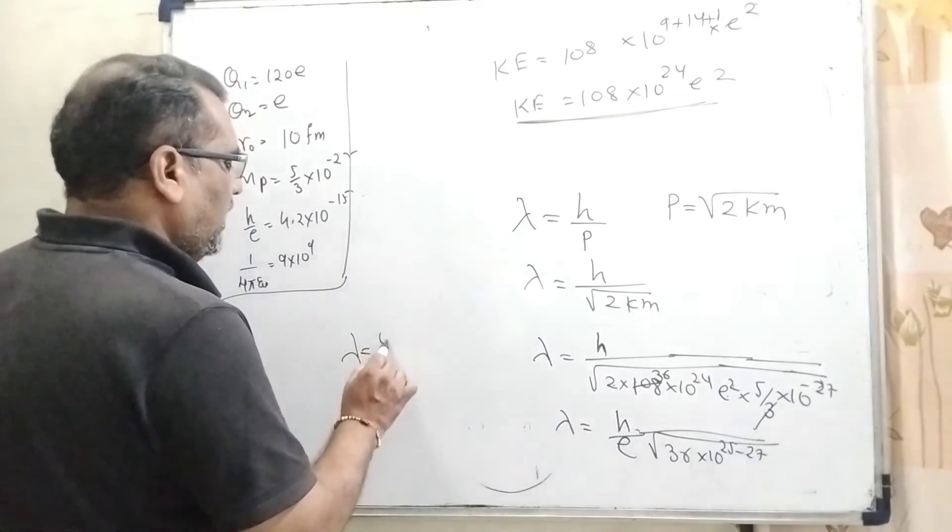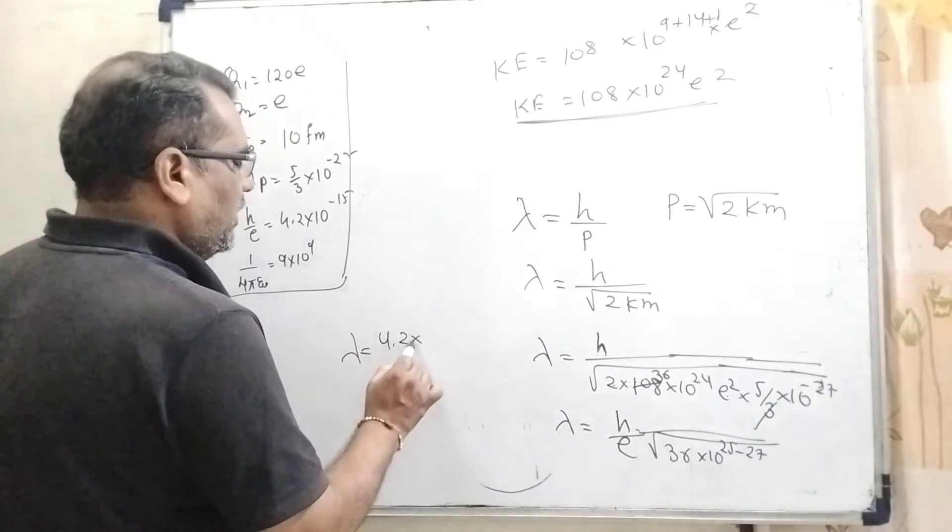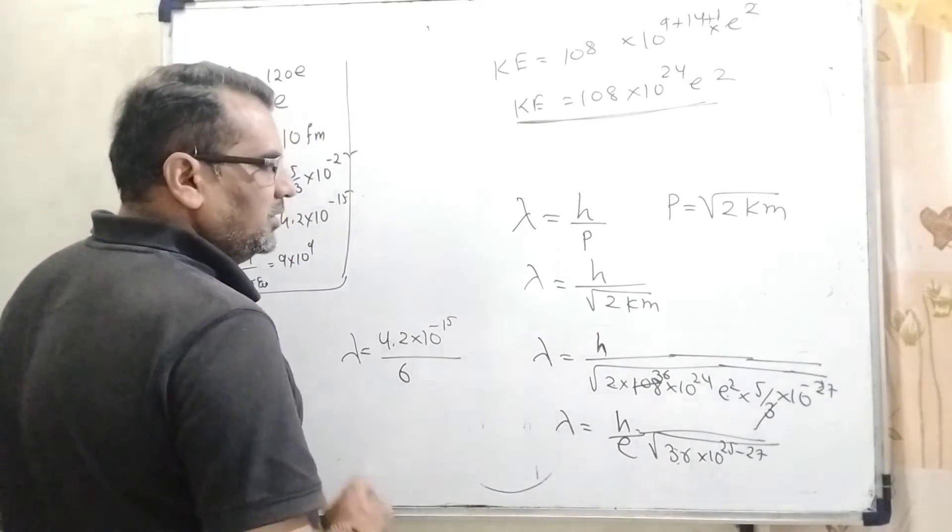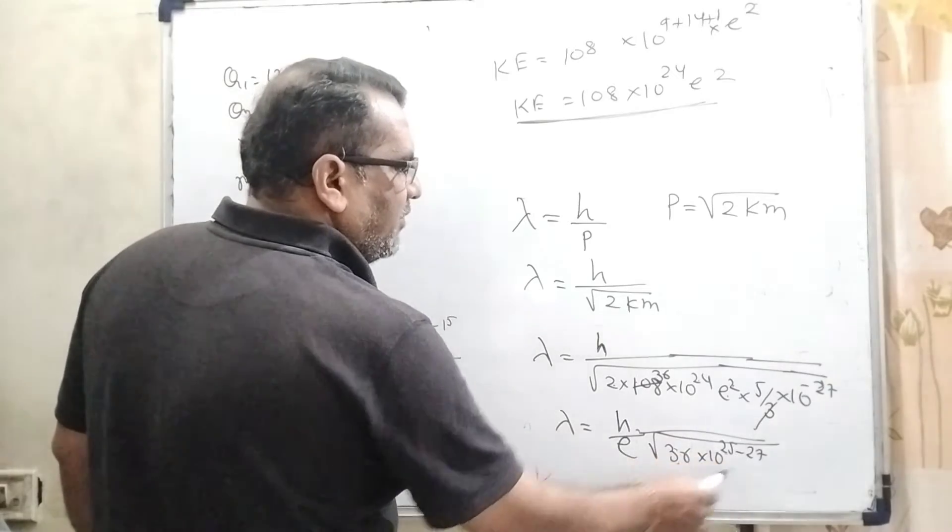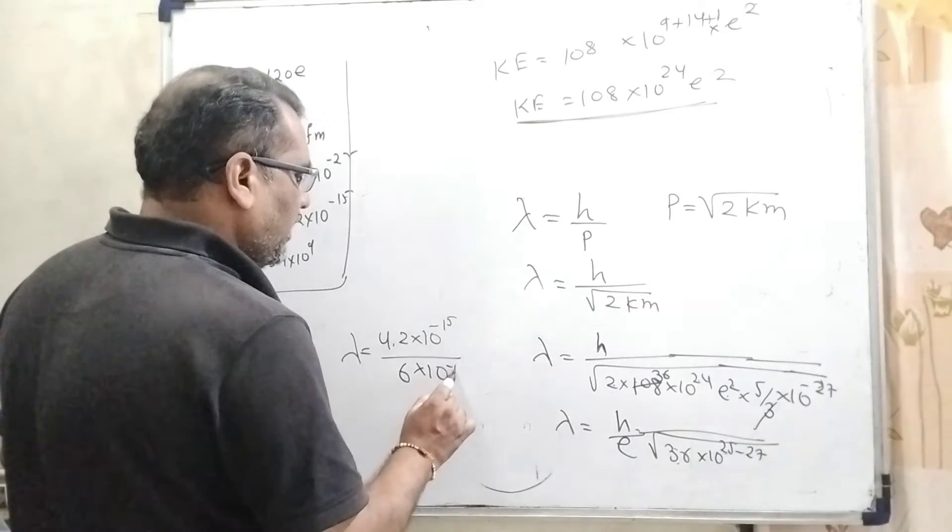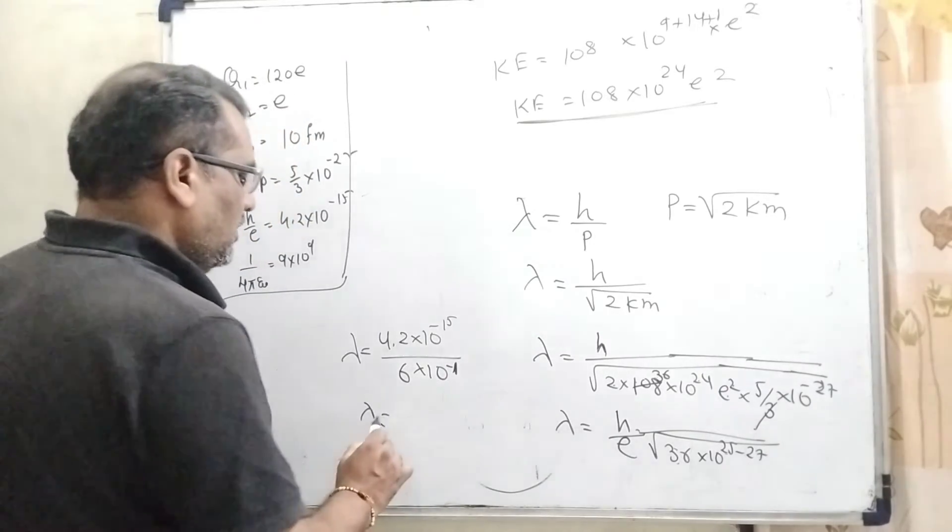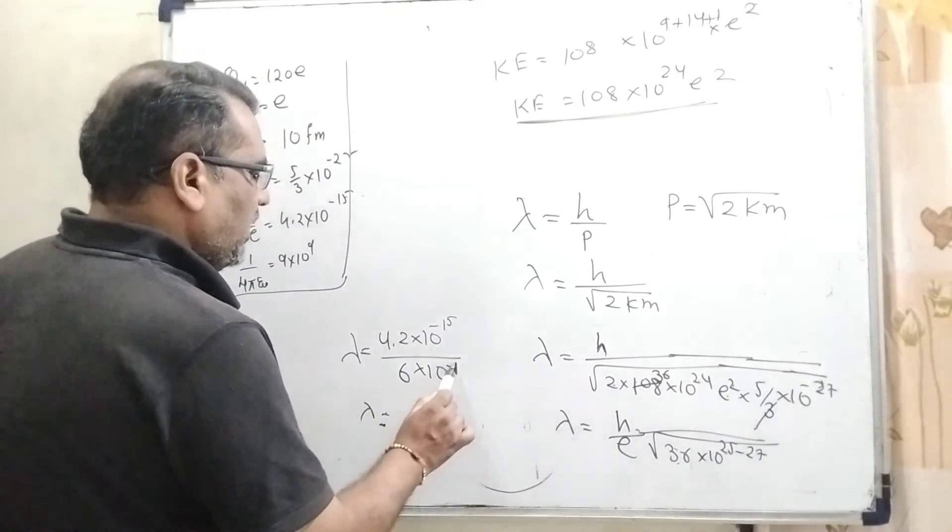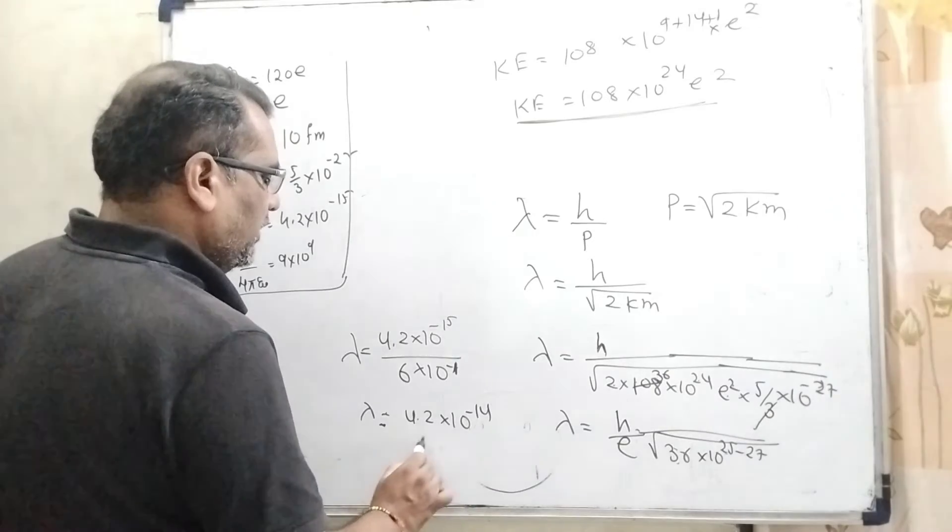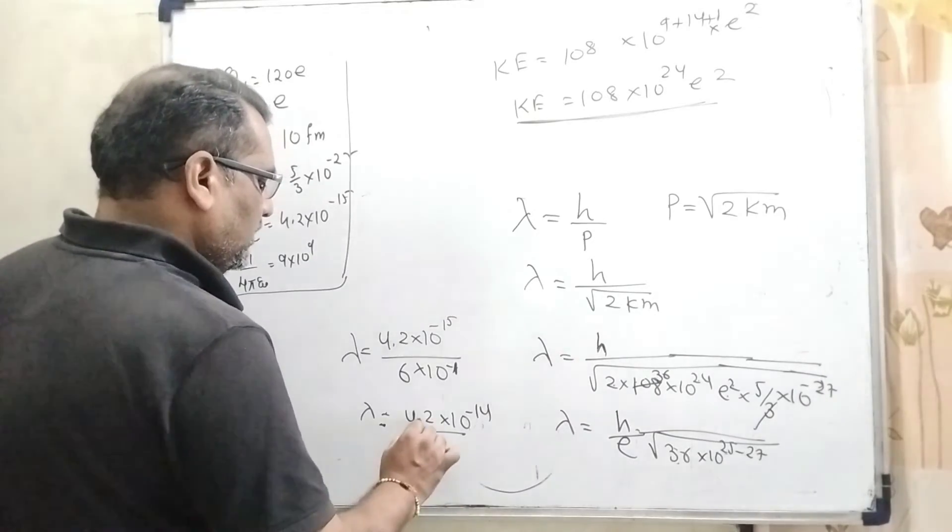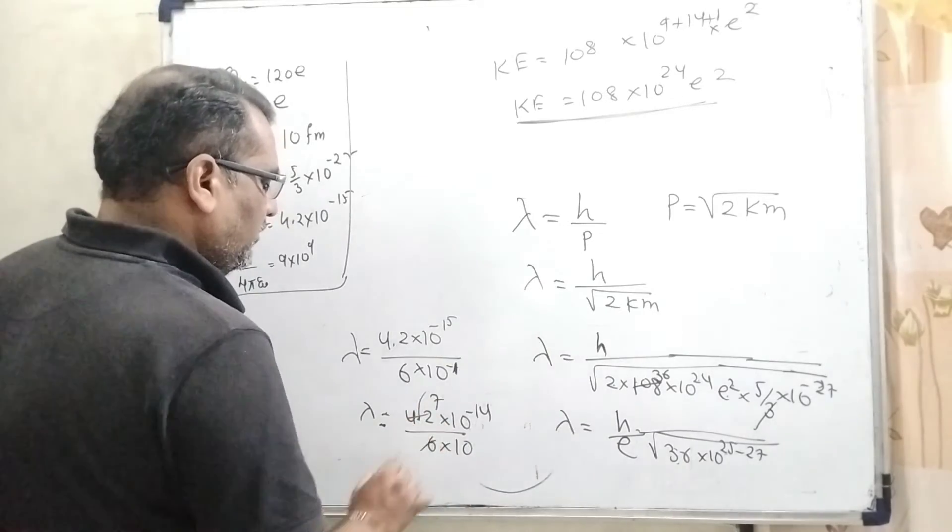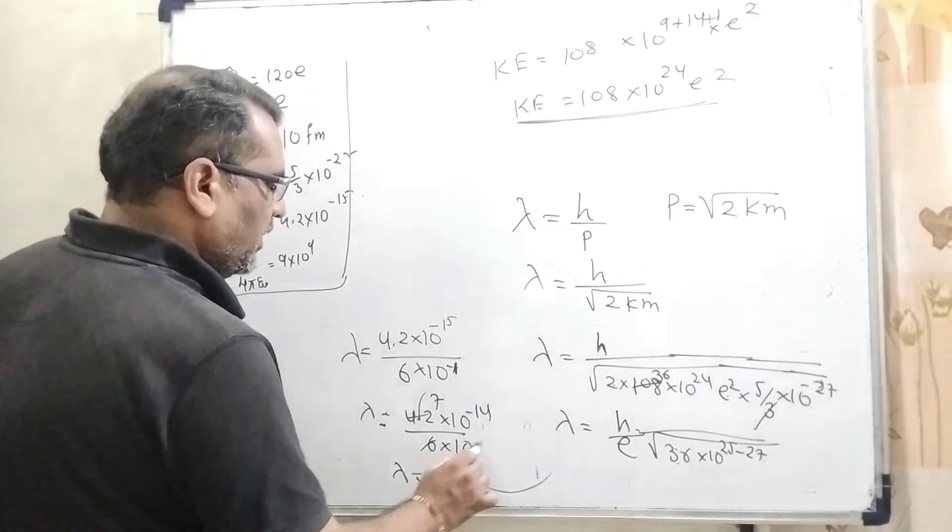Root of 36 becomes 6, and 25 - 27 is 10^-2, then it becomes 10^-1. So this -1 goes to numerator, becoming -16. Then 42/6: 6 × 7 is 42, so 7 × 10^-15.